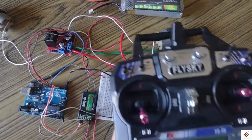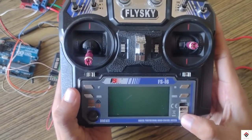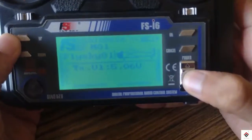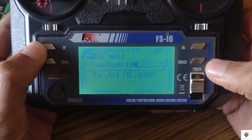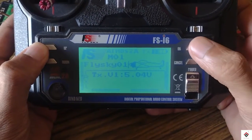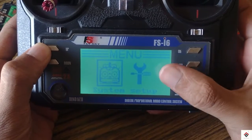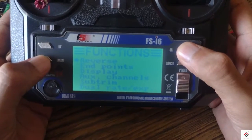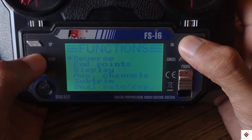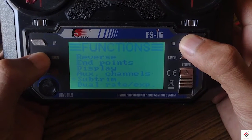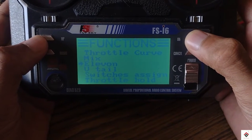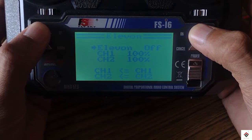I am using this Flysky FS-i6. On the transmitter we have to do some settings to control the robot. We have to mix channel 1 and 2. For that, go to menu setup, now type 1 and 2, and click the command button. By default it will be in off condition, turn it on.